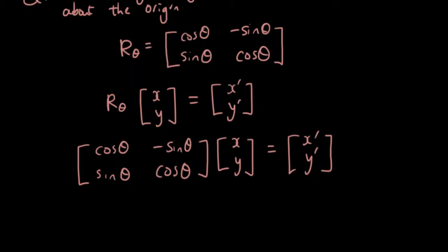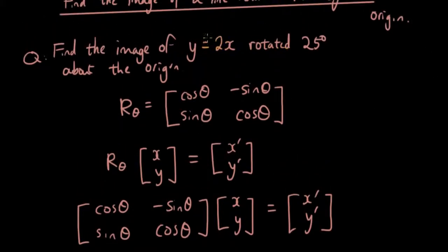Okay, now let's have a look at our equation. We have an equation y equals 2x that relates the x variable with the y variable. This is the equation of our original line. Now, what we're trying to get to is we want to know what y' is in terms of x'.